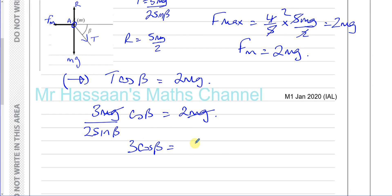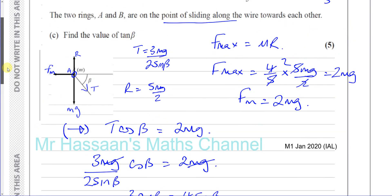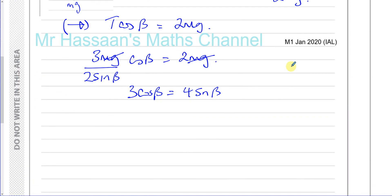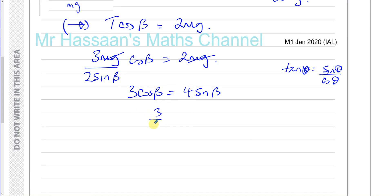They asked us to find tan beta. We know tan beta equals sine beta over cosine beta. Dividing both sides of 3 cosine beta equals 4 sine beta by cosine beta gives 3/4 equals sine beta over cosine beta, which equals tan beta. Therefore tan beta equals 3/4.